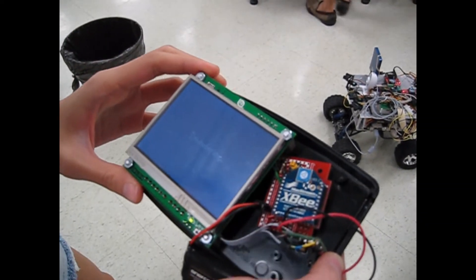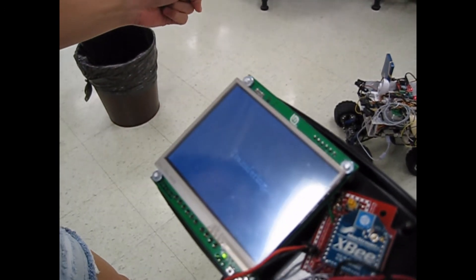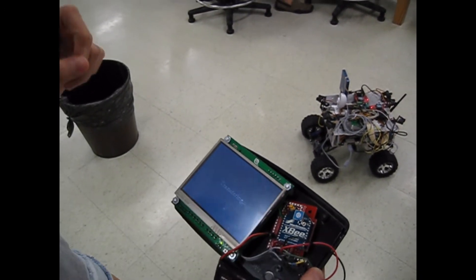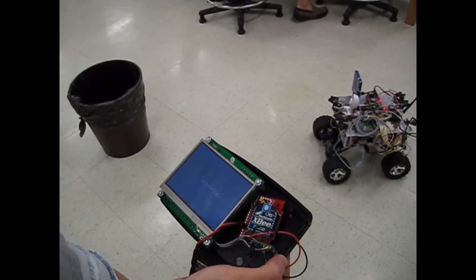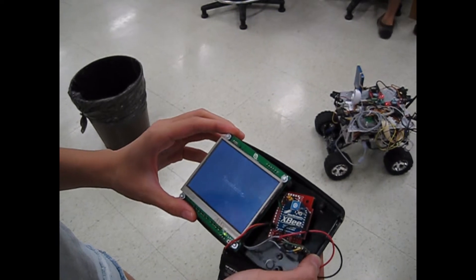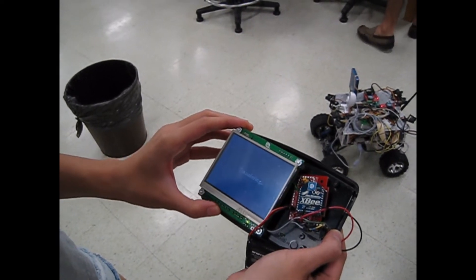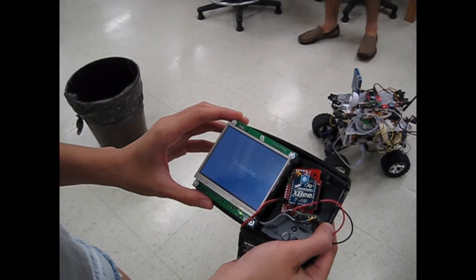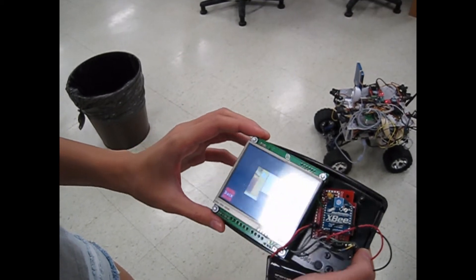So when I hit Webcam, the car's webcam, which is mounted to the front of it, will take a picture, and then it will transfer the image data to the controller using Zigbee. But the transfer takes about 20 seconds since Zigbee has such a low bandwidth. So right now it's transferring. And there's the image.